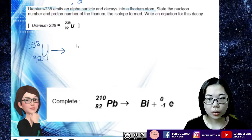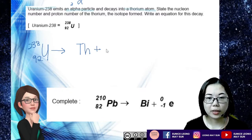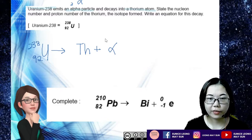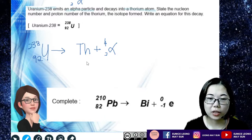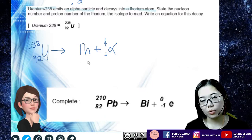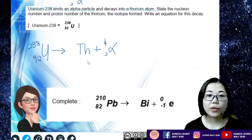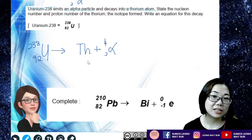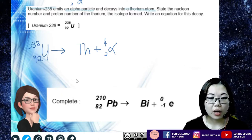This is where I'm going to write thorium — thorium is Th — plus an alpha particle. Alpha particle is alpha-4,2. Now we have to find the nuclear number and the proton number. Just as in chemistry you balance the mole number, in physics for radioactive decay we are going to balance the nuclear number and the proton number.